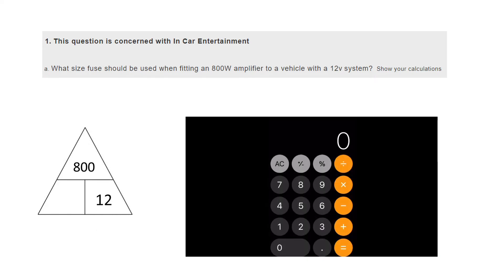I've got my calculator here, basically it's going to be 800 divided by 12. So let's just put that into the calculator, 800 and then press the divide button, divide by 12 and then equals. It equals 66.666 recurring.